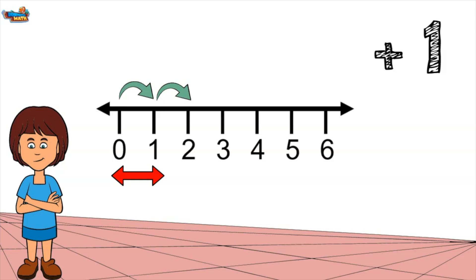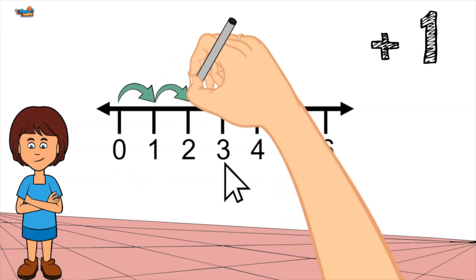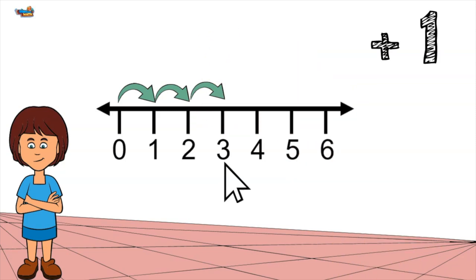To find the next number in the pattern we need to apply the rule. We start at 2 and add 1. The next number in the pattern is 3.